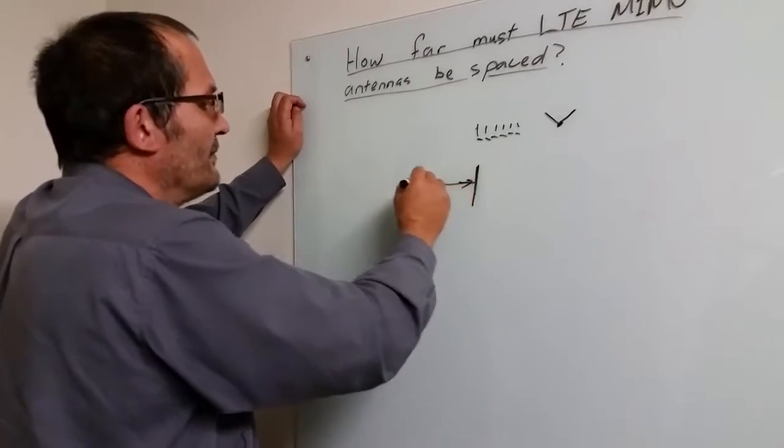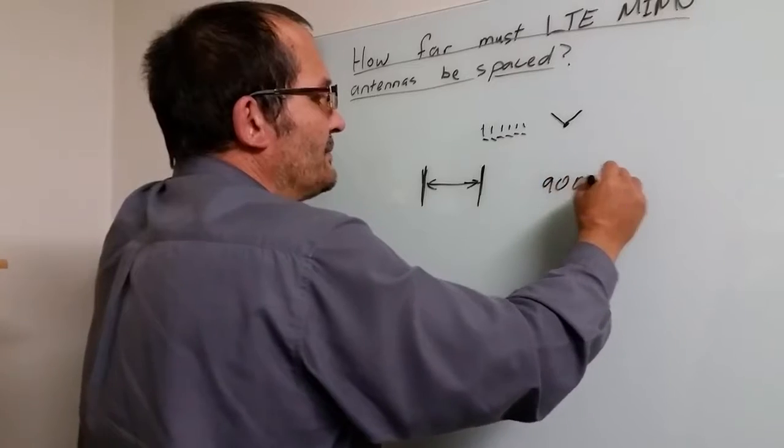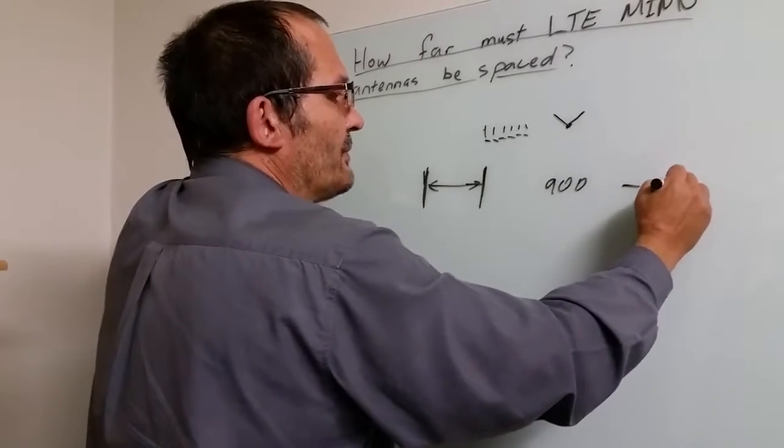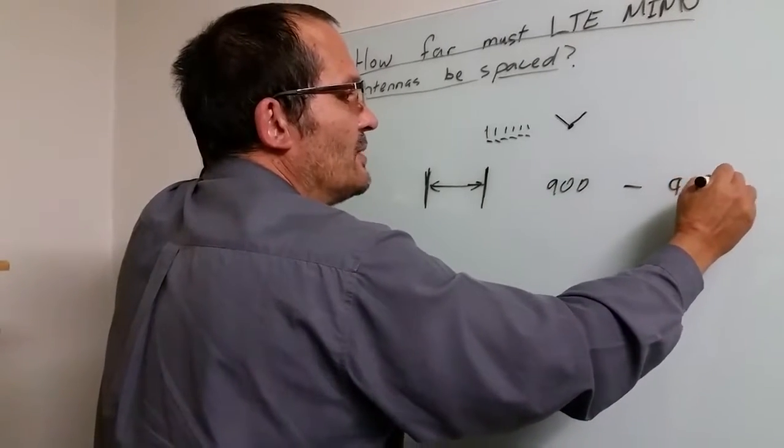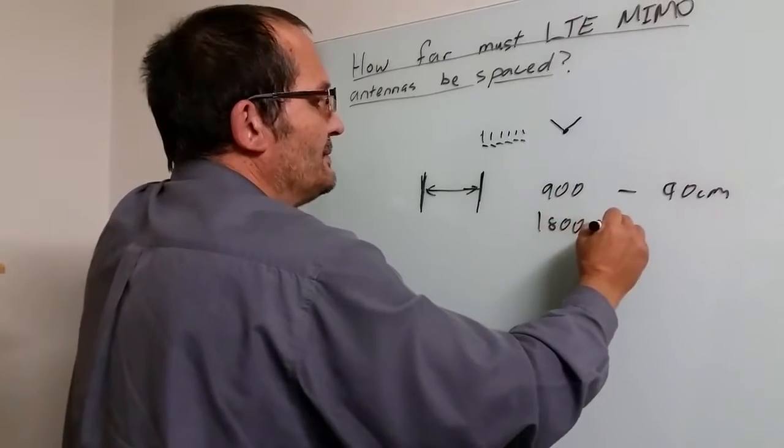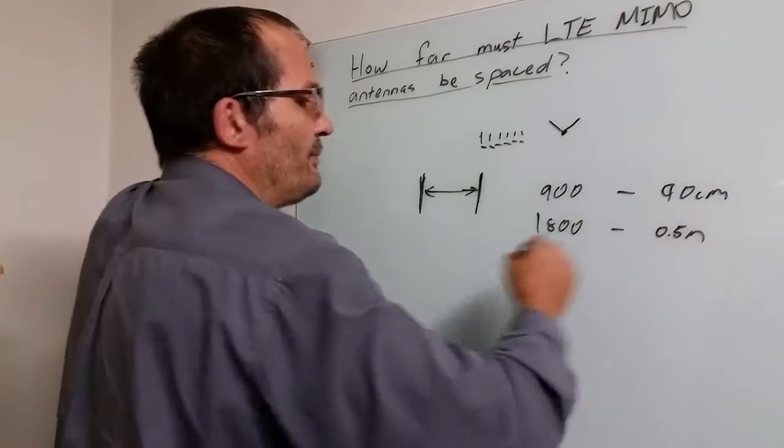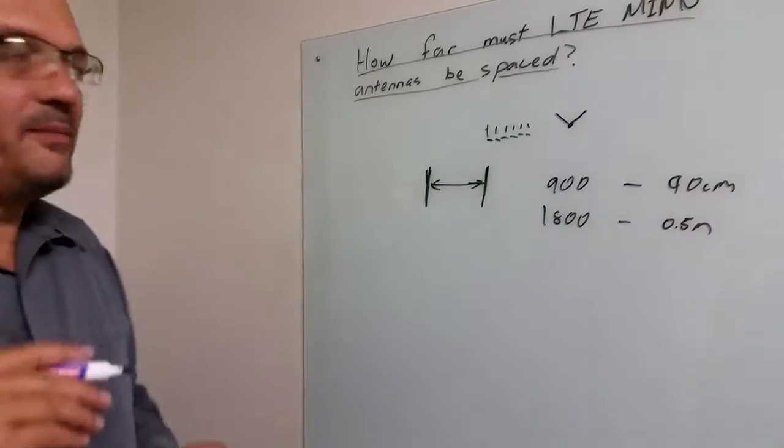And that spacing there, if I give you a very simple rule, at 900 MHz should be 90 centimeters, almost a meter, at 1800, half of that, about 0.5 meter, and I would say 0.5 meters is where you should stay.